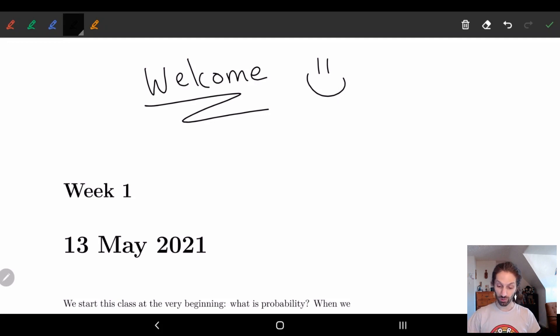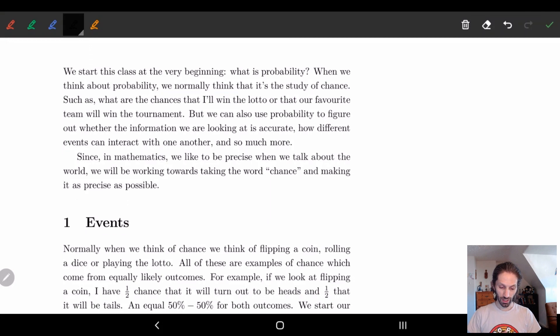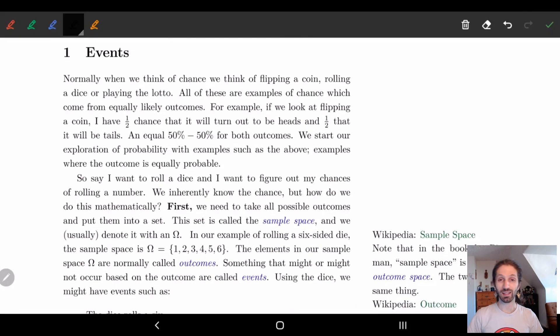We're going to talk about how probability interplays with what we're doing in mathematics. What is probability? It's basically the study of chance. We use probability to figure out what the chance of something happening or not happening. Since in mathematics we like to do things precisely, we're going to take this word chance and make it as precise as possible, making it into mathematical terms.